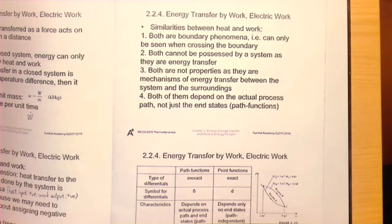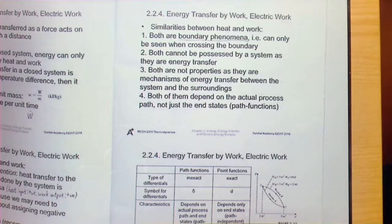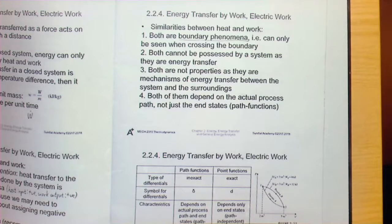The first similarity is that both are boundary phenomena — they can only be observed when energy transfer crosses a boundary. Second, both cannot be stored or possessed by the system — energy is what is stored in the system, but energy transfer cannot be possessed. Third, both are not properties, because they are mechanisms of energy transfer between the system and its surroundings.